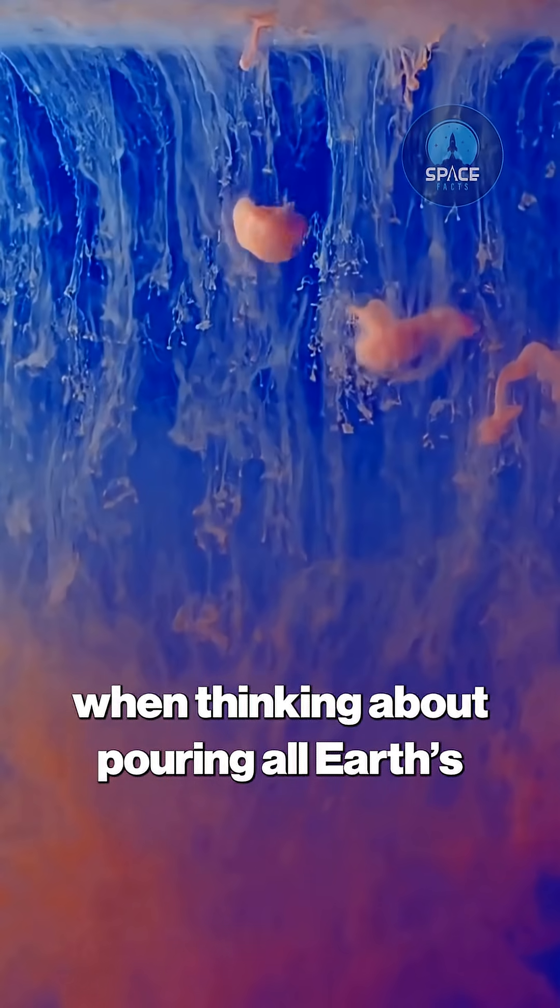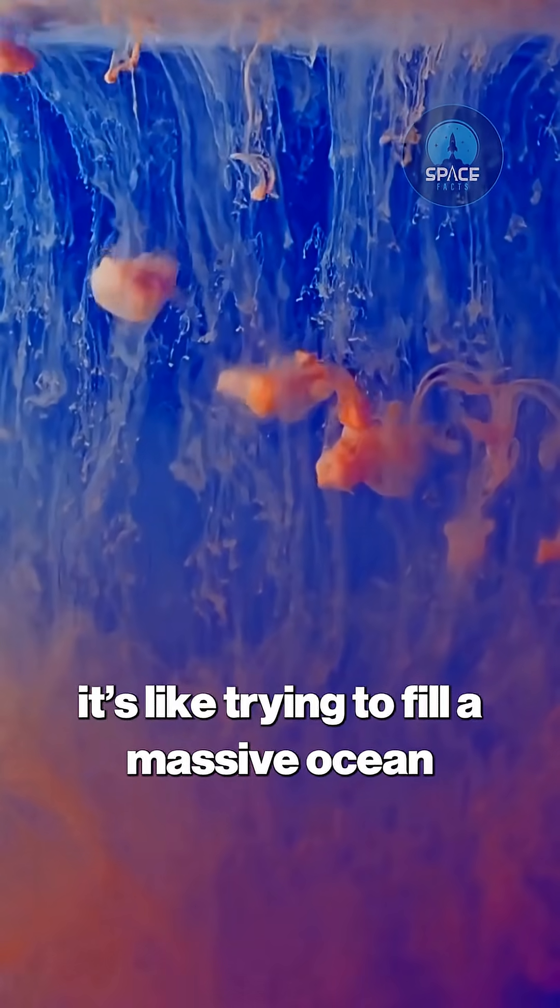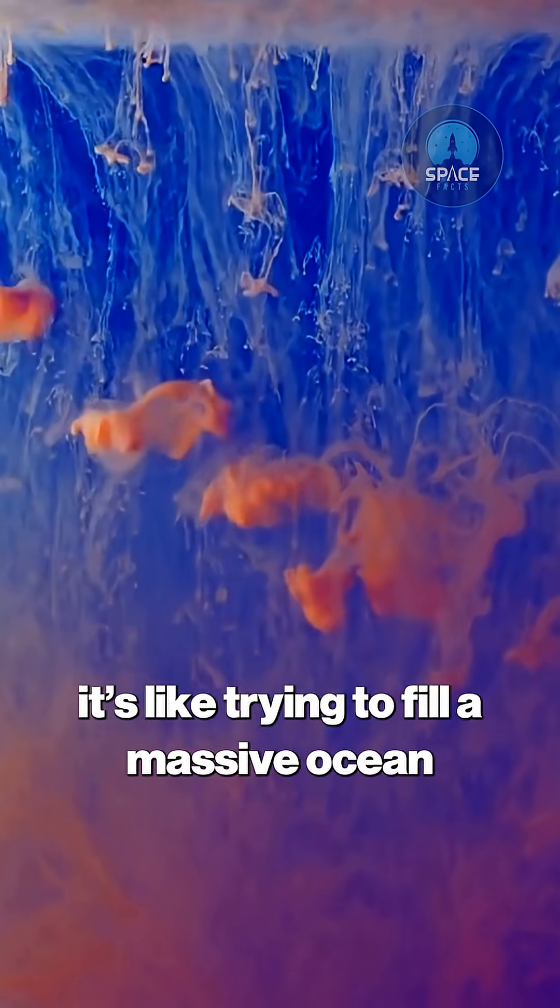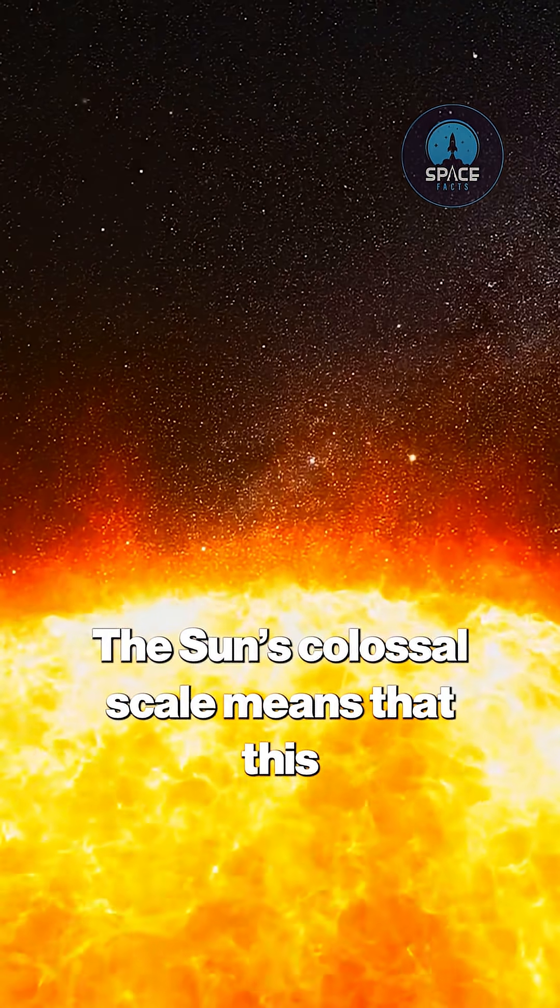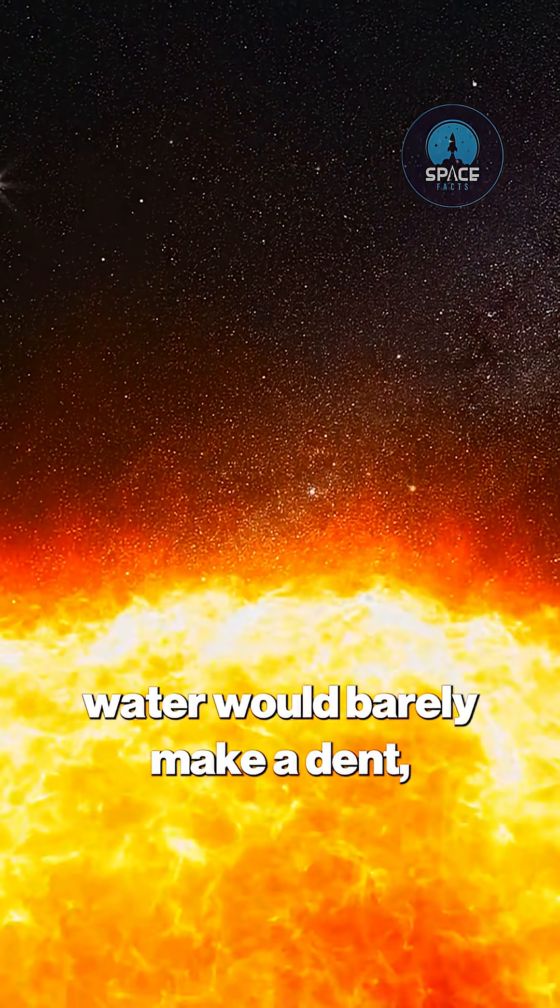So when thinking about pouring all Earth's water onto the sun, it's like trying to fill a massive ocean with a single bucket of water. The sun's colossal scale means that this water would barely make a dent,